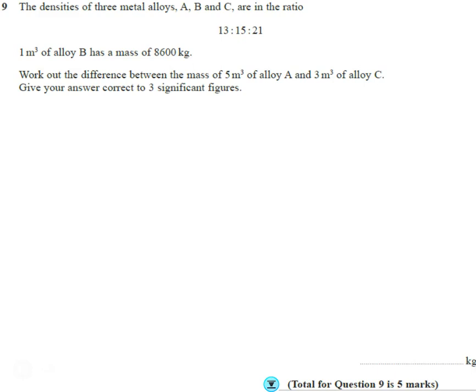Right, okay. So here we are, question number 9. And it's a little bit tricky because we've got to keep our bits of hours. So the first thing we know is we see there's density. So we remember that density is mass divided by volume. So we know that one meter cubed of B has a mass of 8600. So if we consider the ratio A to B to C, 13 to 15 to 21.